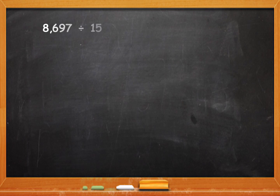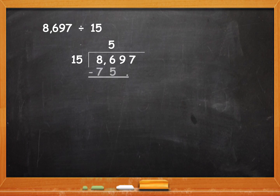Let us take the example of 8697 divided by 15 first. You know the tables of 15, so long division is easy. Arrange. Start with 8 — not possible. 86 by 15: 15 will go 5 times. 15 fives are 75. Remainder is 11.